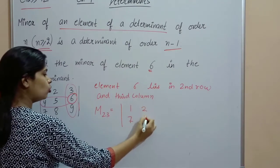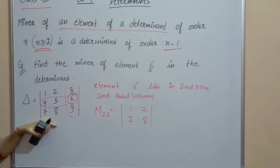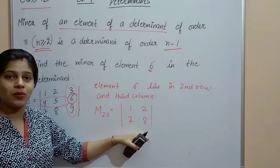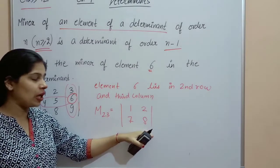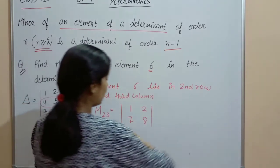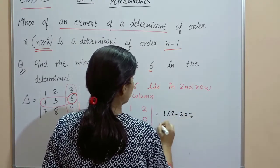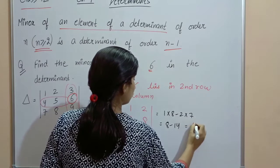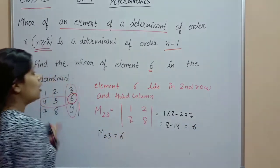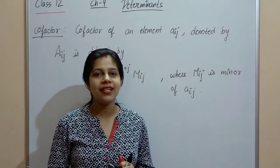After deleting the second row and third column, the remaining elements are 1, 7, 2, 8. This determinant was of order 3, so the required determinant will be of order n−1 = 2. The determinant is 1×8 minus 2×7, that is 8 minus 14, which gives minus 6. So M23 of element 6 equals minus 6.